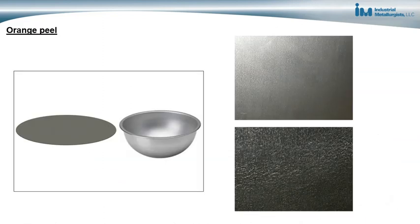The first case study involved a manufacturing quality problem. My client was taking circular pieces of sheet metal steel and deep drawing bowls out of the steel. Occasionally they would get bowls that would have a cosmetic defect called orange peel. It's called orange peel because the surface has the appearance of an orange peel. The bottom image shows a bowl with the orange peel; the top image shows a bowl without it.